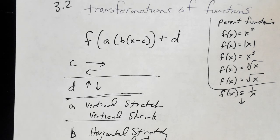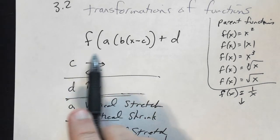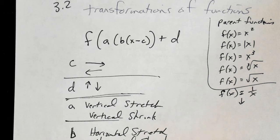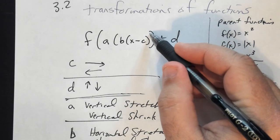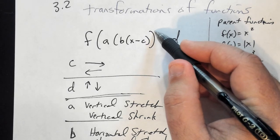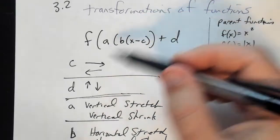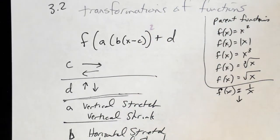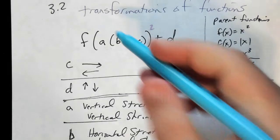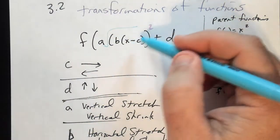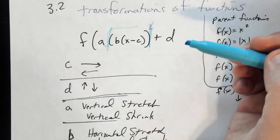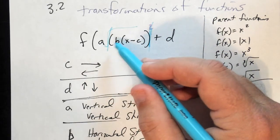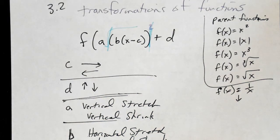Here is your basic function and here are the transformations. If it's a square, you have a square here; absolute value has absolute value bars; square root has a square root symbol. The D value — whatever number is in for D — is always on the outside. C is always inside. A is outside in front, and B is in front but inside.